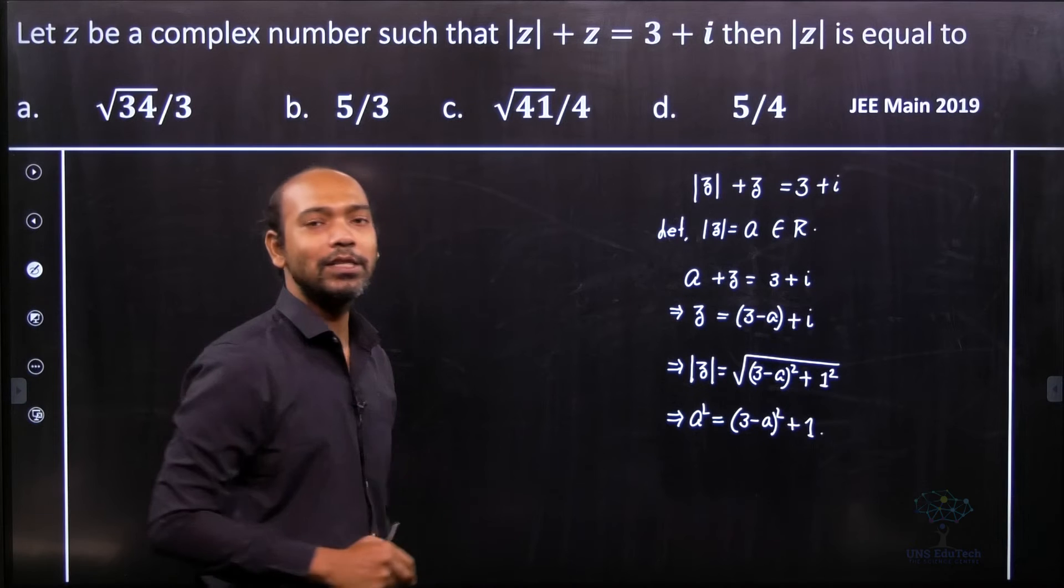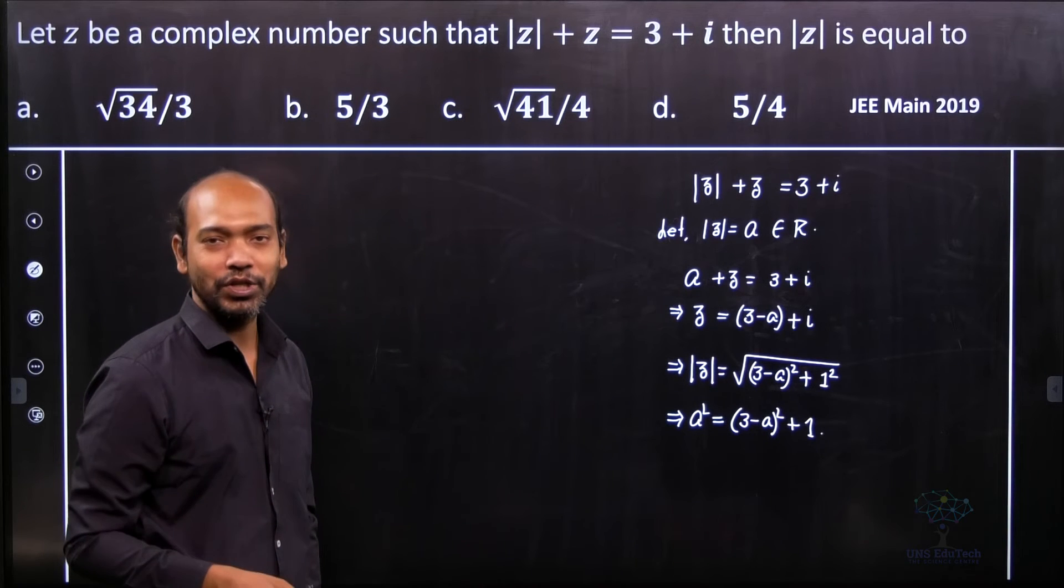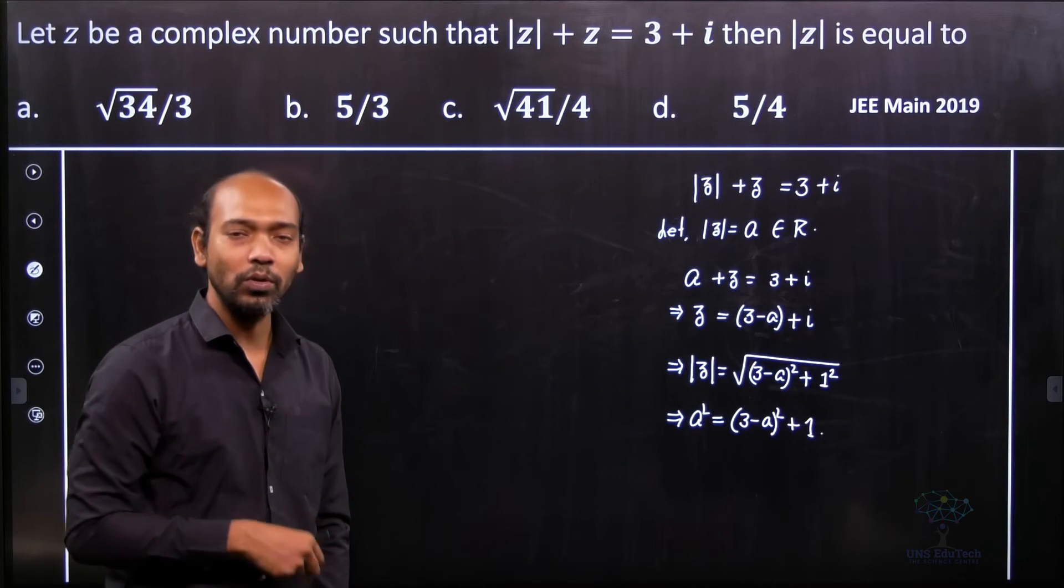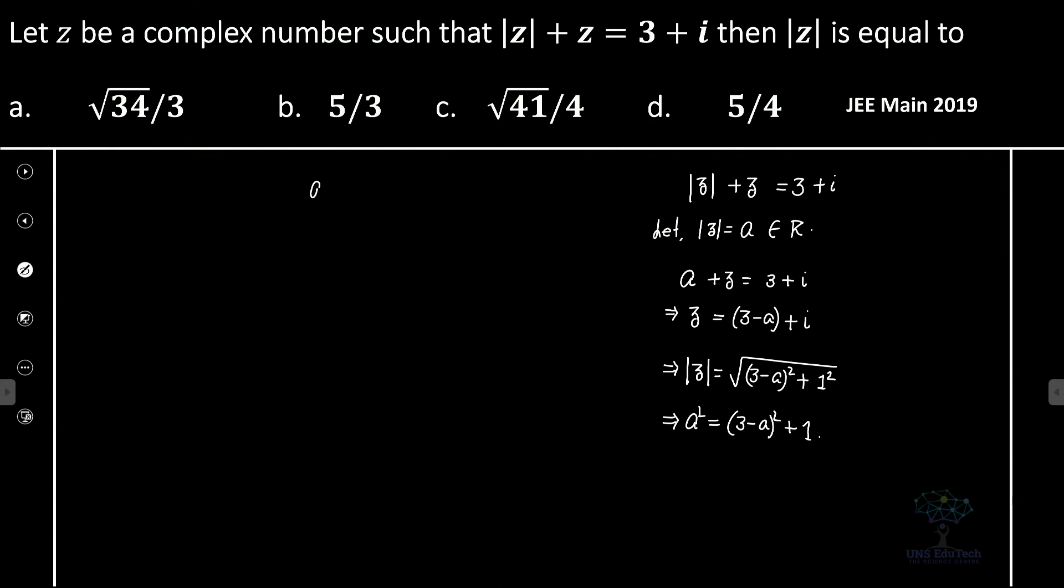Now see, it becomes a real number quadratic equation kind of problem. Let's solve it. On the left hand side it's a squared. This is 9 plus a squared minus 6a plus 1, which implies that 6a equals 10, which implies that a equals 10 divided by 6, which is 5 divided by 3.